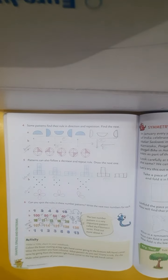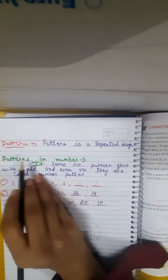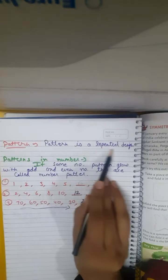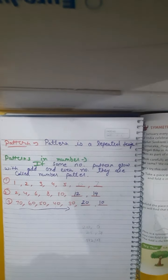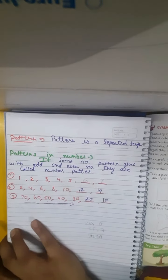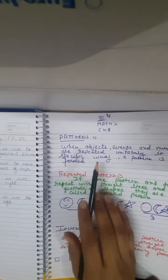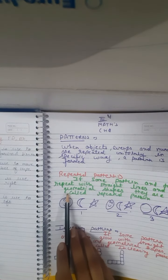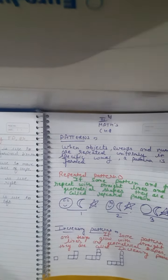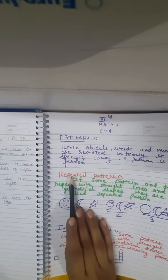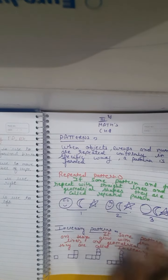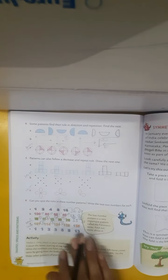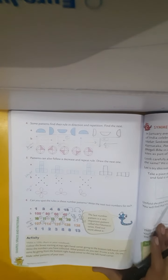Students, what is a pattern? Pattern is a repeated design — a repeated design that follows a uniformly specific way with objects, events, numbers, and geometrical shapes. This is all about patterns. Do this exercise on your own. That's all for today. Stay home, stay safe. Thank you.